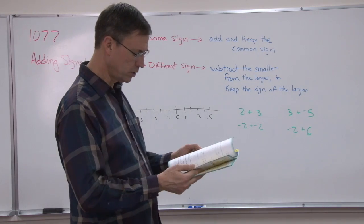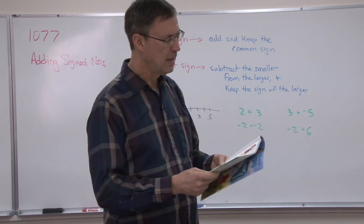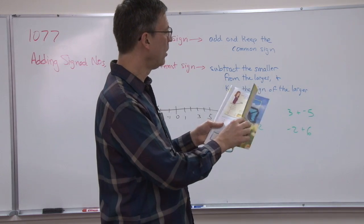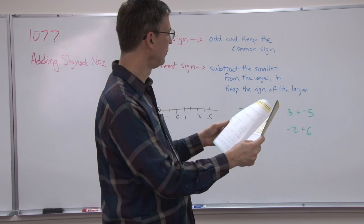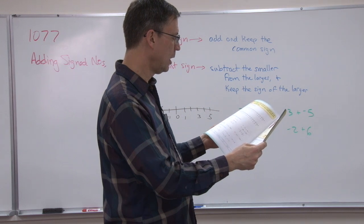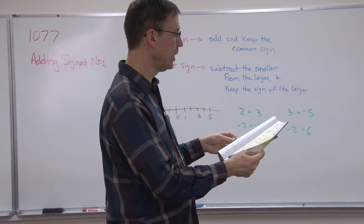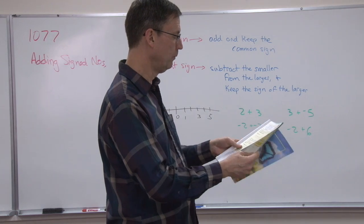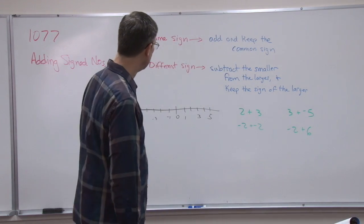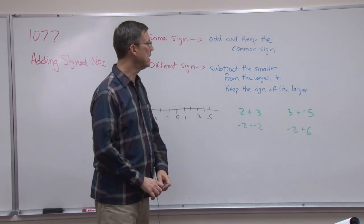Let's go first to page six — actually, I want to go back to page four. There we go. The topic on page four is adding two numbers when the signs are the same.